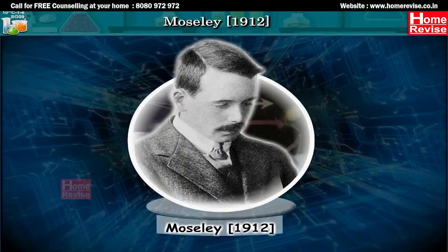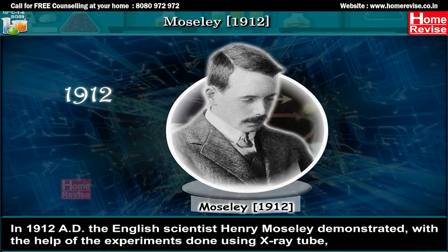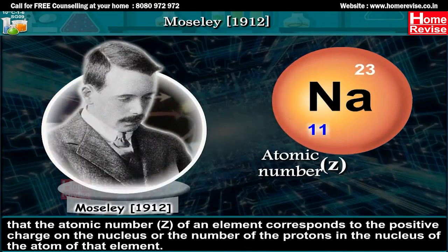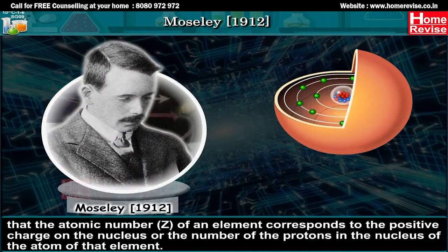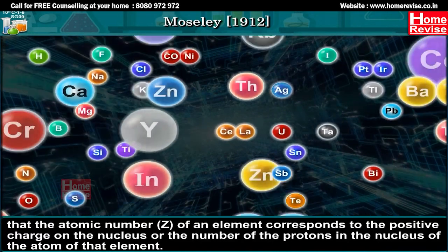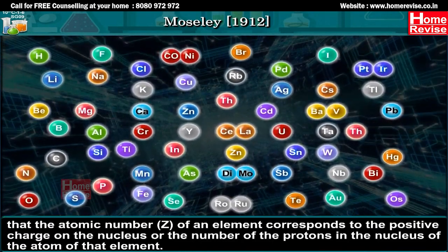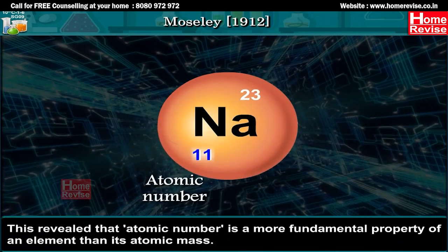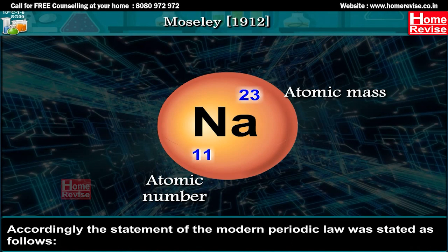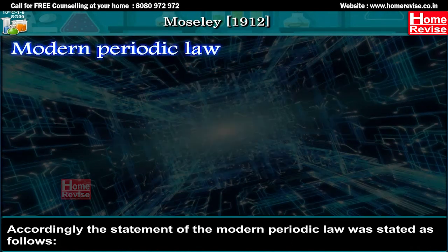Moseley, 1912. In 1912 AD, the English scientist Henry Moseley demonstrated, with the help of experiments done using an X-ray tube, that the atomic number Z of an element corresponds to the positive charge on the nucleus, or the number of protons in the nucleus of the atom. This revealed that atomic number is a more fundamental property of an element than its atomic mass. Accordingly, the modern periodic law was stated: properties of elements are a periodic function of their atomic numbers.